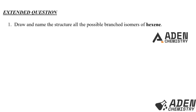We go to the extended question. Question number one: draw and name the structure of all the possible branched isomers of hexene. You are supposed to try this and submit your answer in the comment section. Thank you — that's the end of our video today.